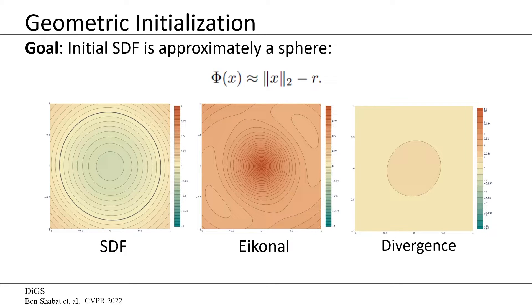Previous works show that initializing to a sphere provides many benefits in the context of ReLU and softplus activation-based networks. Here, we propose geometric initialization for SIRENs by carefully choosing the weights and biases for the first and last layers.